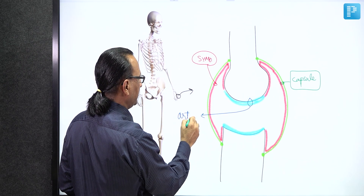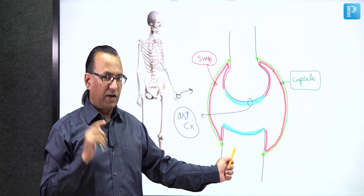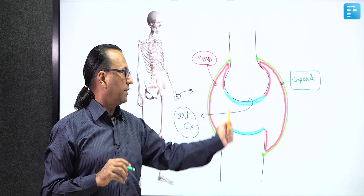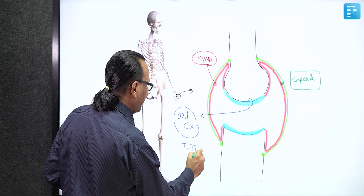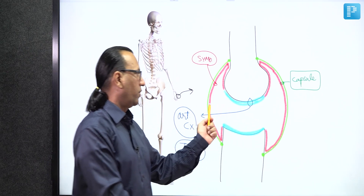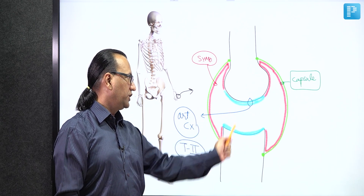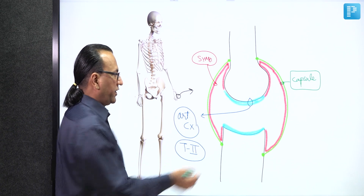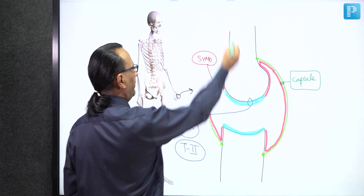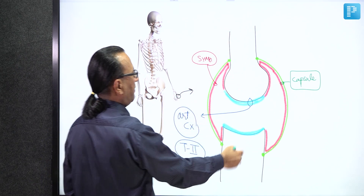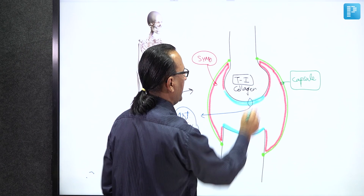Articular cartilage is mostly hyaline cartilage lining the ends of bones, and the type of collagen fiber it contains is type 2 collagen. In our question, the synovial fluid contained type 2 collagen molecules, which could be due to degeneration of the articular cartilage. Bones - the metacarpal bone and proximal phalanx - contain type 1 collagen. So bone has type 1 collagen, and cartilages usually have type 2 collagen.